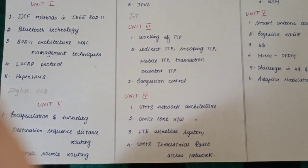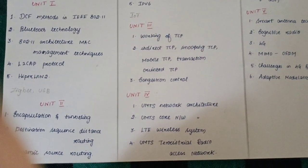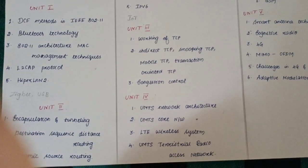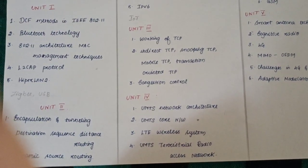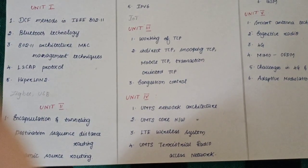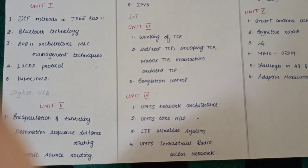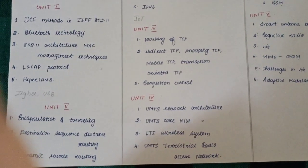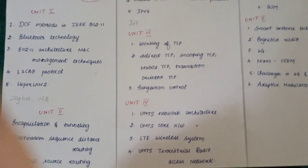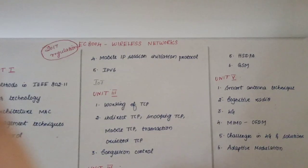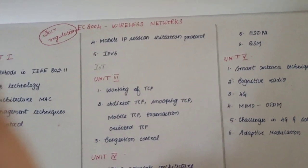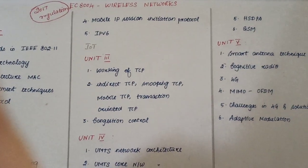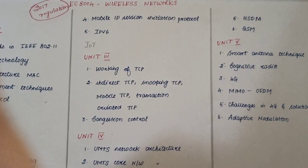Unit 4 important topics: UMTS network architecture is a central important question, along with core network architecture, UMTS Terrestrial Radio Access Network (UTRAN), LTE wireless system, HSDPA, and GSM architecture.